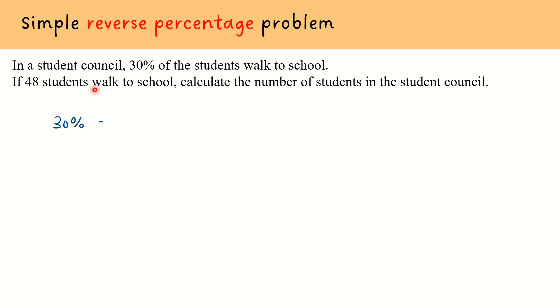Hence, we can write 30% arrow 48 students. I'd like us to take note that the use of this arrow sign is to show that there is a representation of 30% to 48 students. Do take note that 30% is not equal to 48 because what 30% equals is actually 0.3, which we have already learned in the previous section.